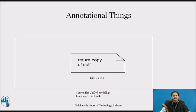Annotational things are the explanatory parts of UML models. There is one primary kind of annotational thing called a note. A note is simply a symbol for rendering constraints and comments attached to an element or a collection of elements. Graphically, a note is rendered as a rectangle with a dog-eared corner, together with a textual or graphical comment, as shown in figure 11.